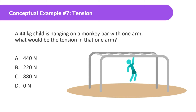Let's look at this example problem. A 44kg child is hanging on a monkey bar with one arm. What would be the tension in that one arm? So we have this one arm here — there's a lot of tension in this arm, especially if you've ever been on monkey bars. His weight is going to be pulling down on him, which is going to be 440 newtons.